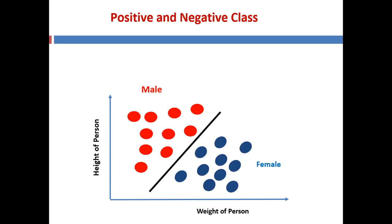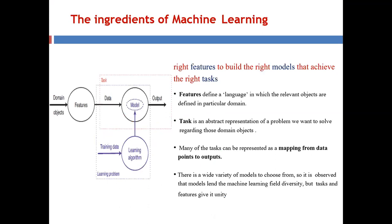Here the male class belongs to the positive class and the female class belongs to the negative class. Another example is detecting whether an incoming email is spam or not spam — spam is the positive class and non-spam is the negative class. That covers the positive and negative class.